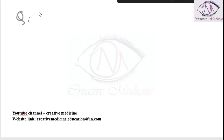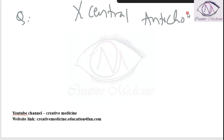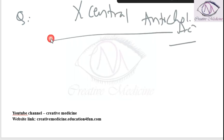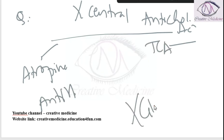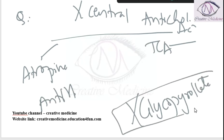Which of the following does not produce central anticholinergic action? Central anticholinergic action is present in atropine sulfate, antihistaminics, and tricyclic antidepressants. Whereas glycopyrrolate has no central anticholinergic action, and that is one reason why it is used in pre-anesthetic medications.